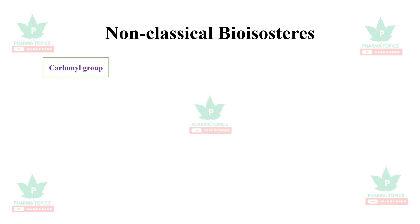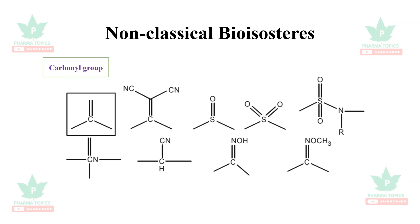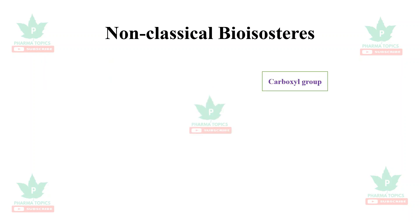Another type is divalent replacements involving single bonds, where –NH–, –CH₂–, –R–, and –O– can be substituted for one another. Non-classical bioisosteres do not obey the same valency or number of atoms. An example is the carbonyl group, which can be substituted with groups such as S=O or SO₂, since these share a similar electronic configuration.